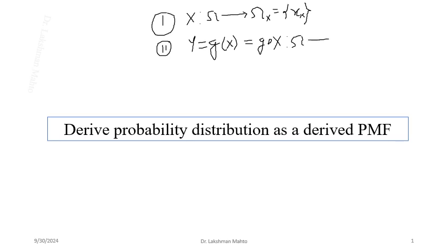This composition maps omega to some range. If omega_X is a discrete set, then omega_Y will also be a discrete set. We can write omega_Y as a sequence of random numbers y_k or y_j, depending on the suffix used.